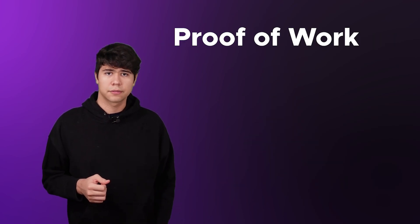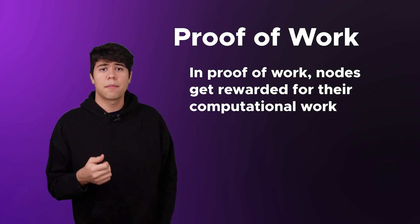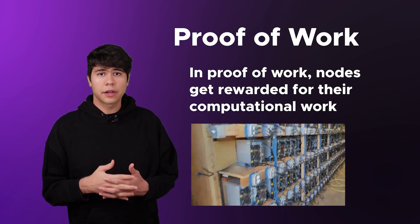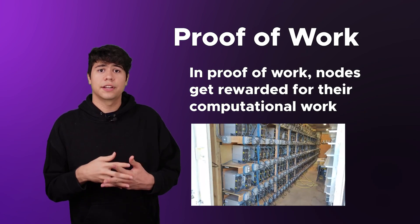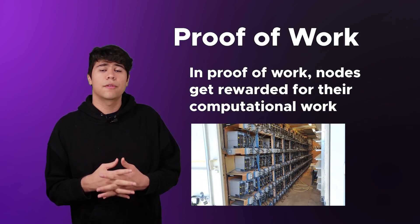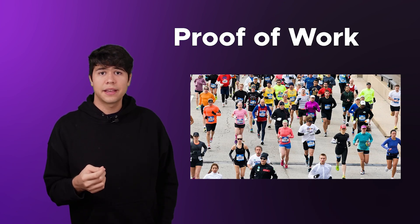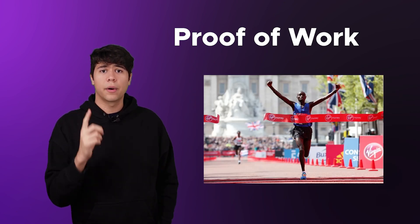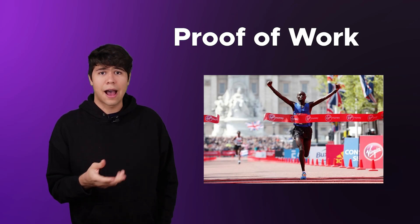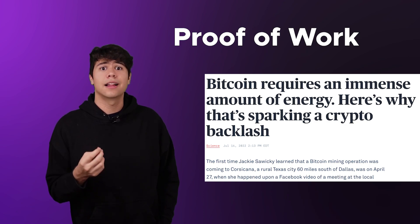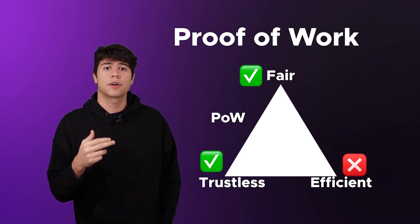In proof of work, nodes get rewarded for computational work. For example, Bitcoin uses proof of work — Bitcoin miners solve complex math problems and get rewarded in Bitcoin. Proof of work is Sybil resistant because you have to put up computational work to get rewarded, and other computers use cryptography to check your work with a hash function. Think of proof of work like a race: anyone can join, but there's only one winner. Hundreds of people can participate, but only one will win and the others don't get compensated. So proof of work is fair and trustless, but not efficient — and this is why Bitcoin is notorious for its energy consumption.